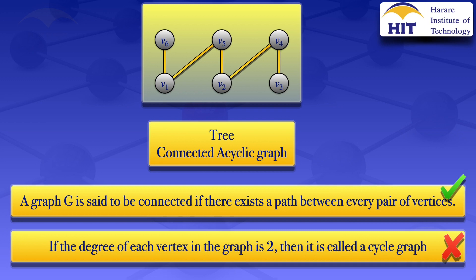So the graph is connected and it is acyclic. We are saying acyclic just because it is not a cycle graph. So we can conclude that the given graph is a tree.